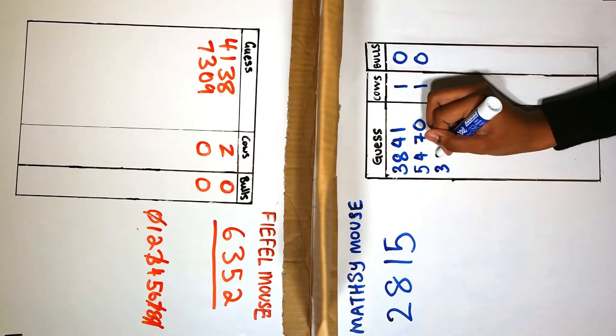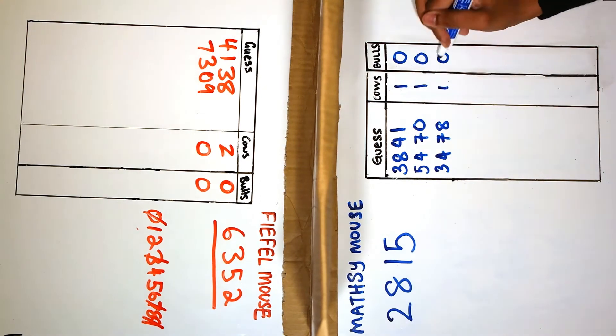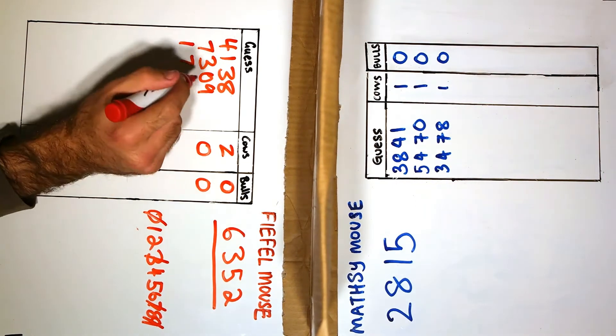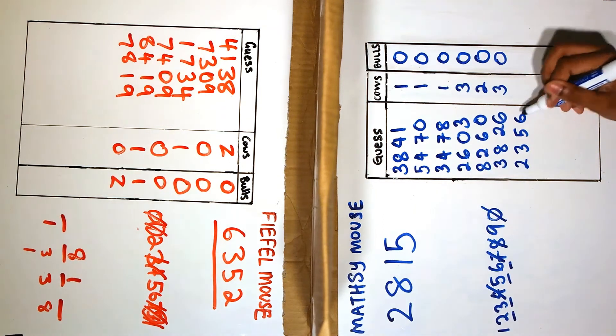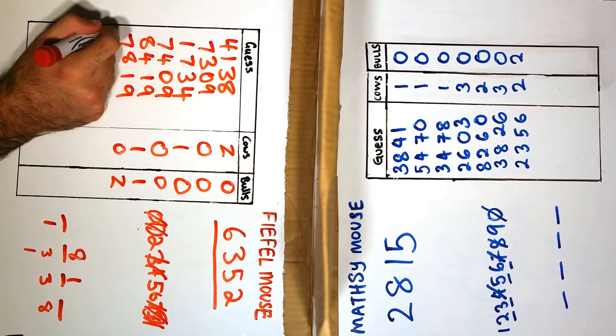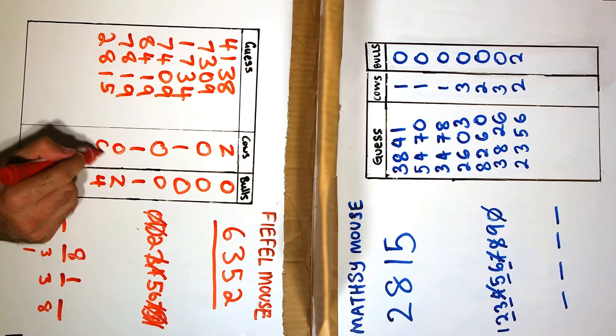The game starts by having two players write down a four-digit code without showing it to the other player. Each number has to be different. Our goal is to crack our opponent's secret code.